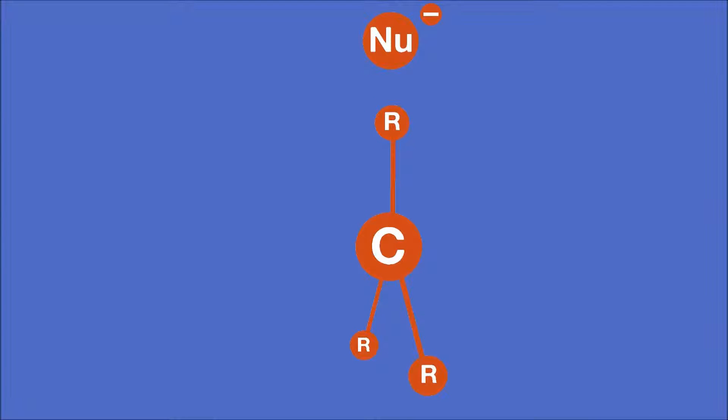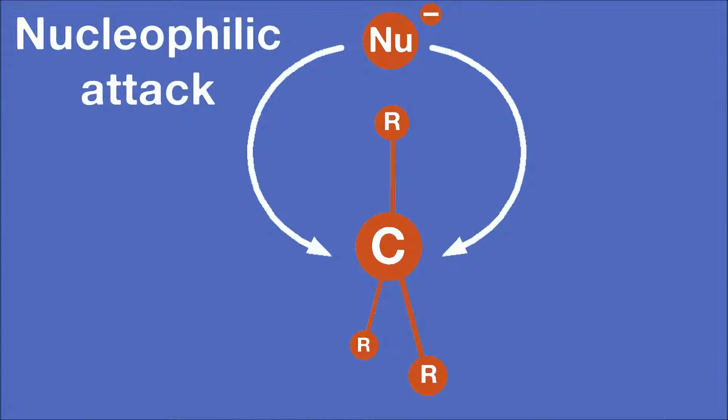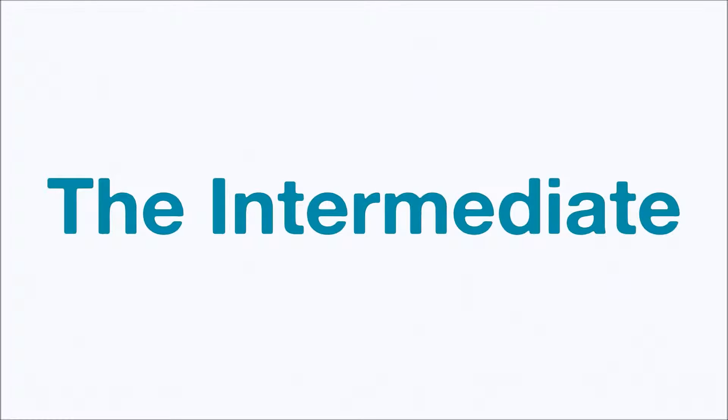Once the intermediate is formed, the nucleophile is free to attack from either side. The most distinctive part of an SN1 reaction is the carbocation intermediate.